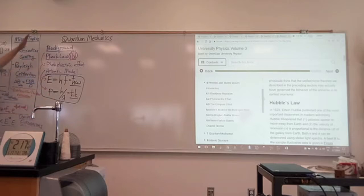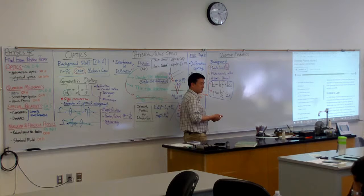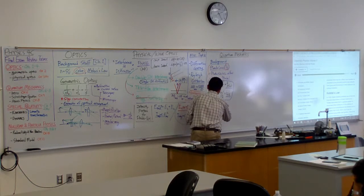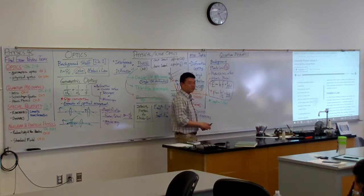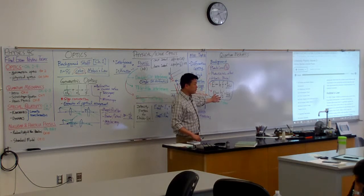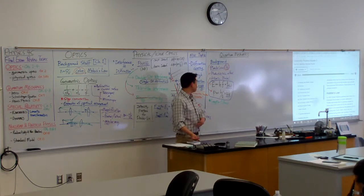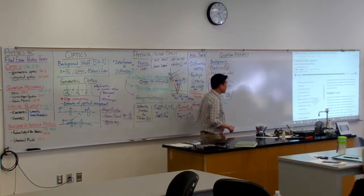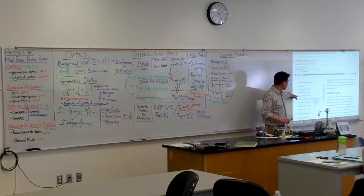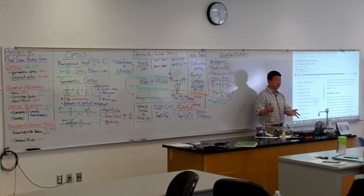There's also the Compton effect — I probably should write it down. I did ask a Compton effect question on exam two, where you used the Compton formula. The Compton effect is an illustration that you should treat light as a particle, because what you see in the Compton effect is very difficult to explain in terms of interactions between a wave and a charge. But if you treat it as a collision between two particles, then it all makes sense.